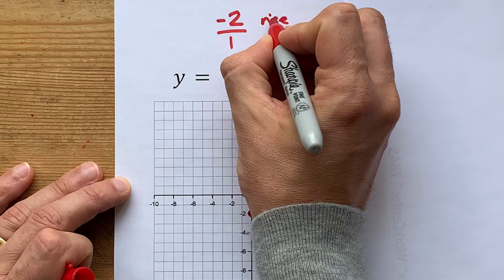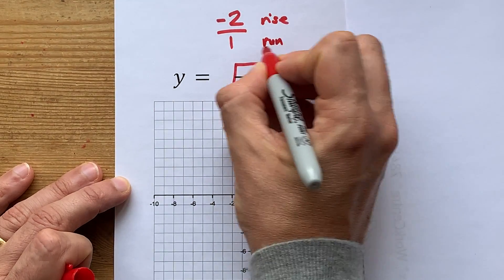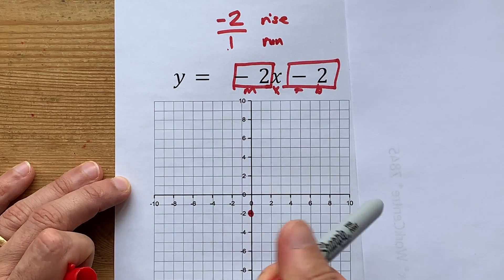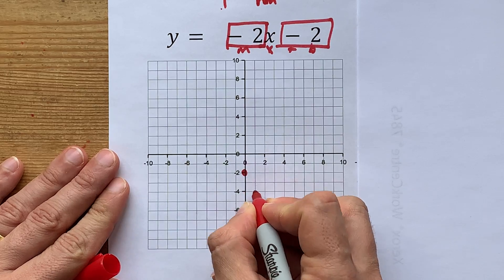Your rise, then, is negative 2, which means down 2. And your run is positive 1, which means to the right by 1. So from this point, I want you to go down 2, right 1.